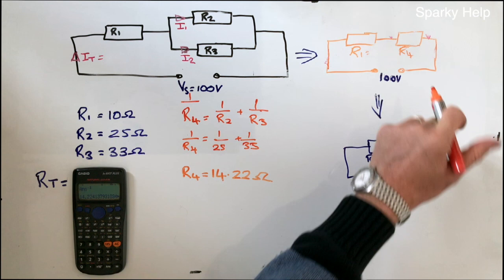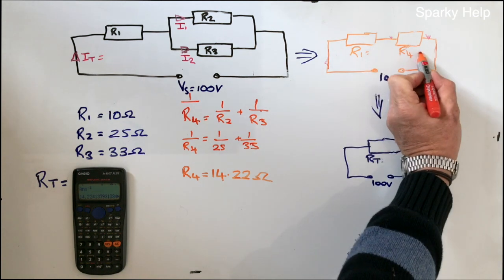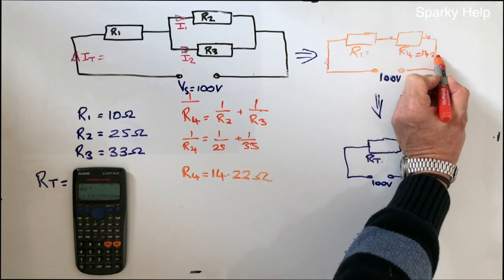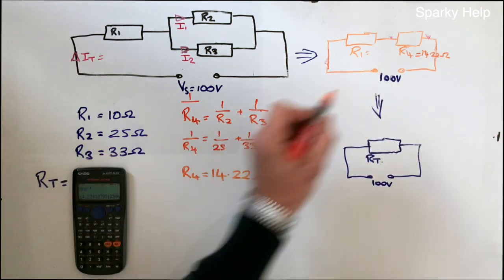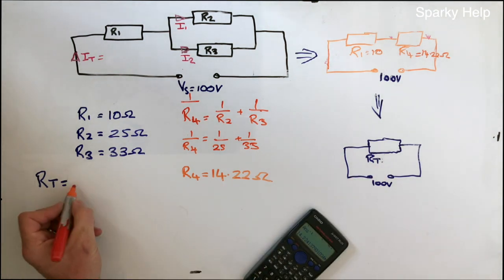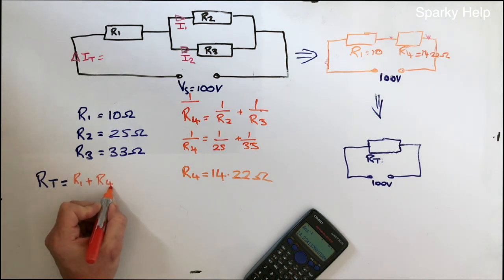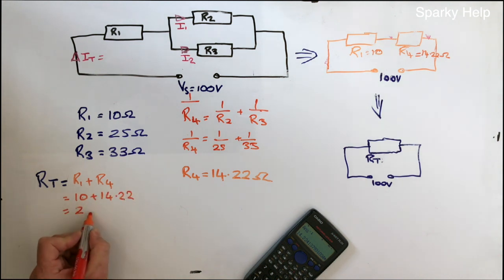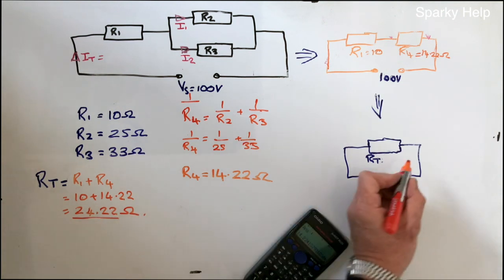OK, that becomes our R4. So we now know what this is. Our original one was 10. So we can now work out RT. RT becomes R1 plus R4. Because we're now looking at the series part. If we put these figures in, 10 plus 14.22. Don't pick the unit. So that is now RT.